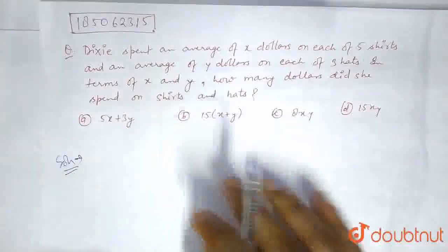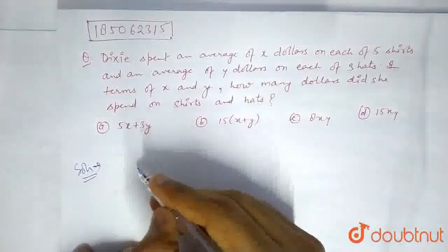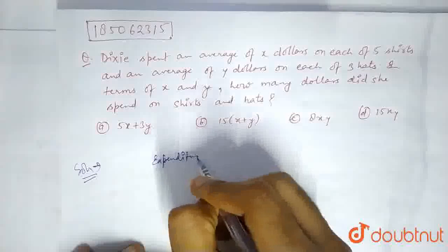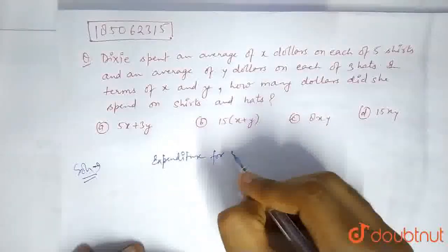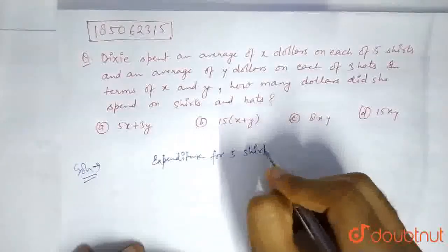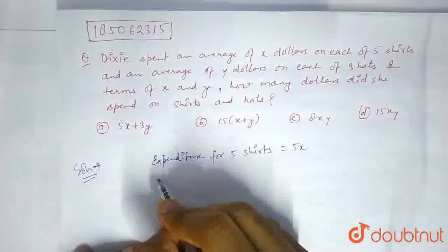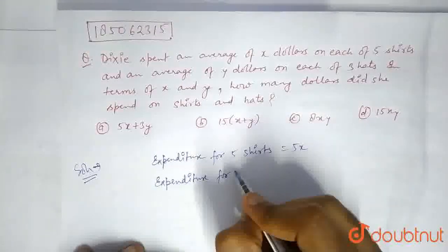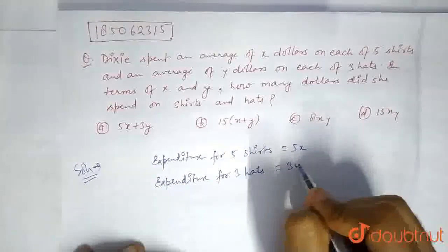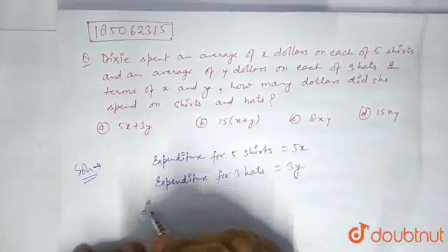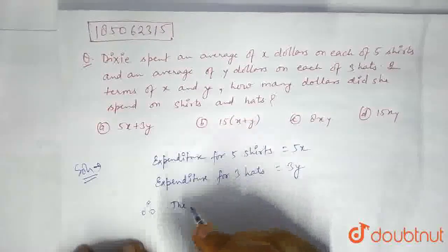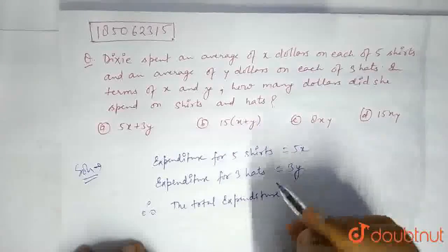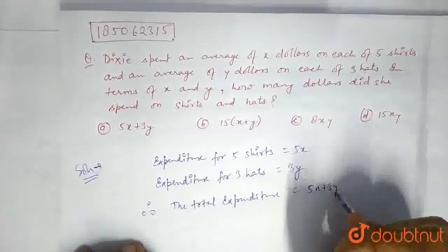Let us write the mathematical terms. Expenditure for 5 shirts is 5X. Expenditure for 3 hats is 3Y. So the total expenditure is actually 5X plus 3Y.